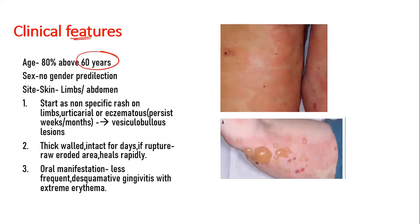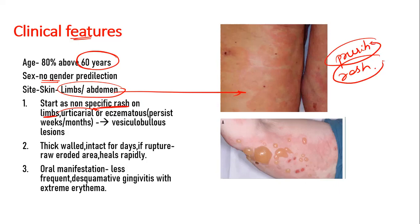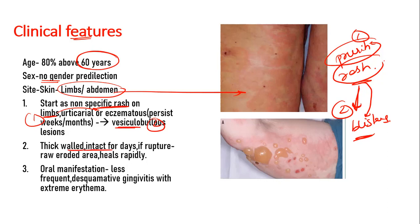Clinically, bullous pemphigoid occurs in 80% of cases above 60 years of age, with no gender predilection. The most common site is the skin of the limbs and the abdomen. It starts as a non-specific urticarial or eczematous pruritic rash on the skin of the limbs and abdomen, which eventually develops into blisters. These blisters are thick-walled and intact — in comparison to pemphigus where blisters are flaccid — and they rupture after many days.